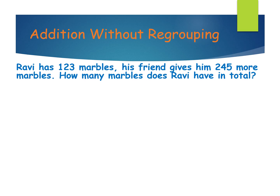First one: addition without regrouping. Here, what is the story sum? Ravi has 123 marbles. His friend gives him 245 more marbles. How many marbles does Ravi have in total? See here — 'total' and 'more' are both keywords of addition. More and total — these two are keywords of addition.